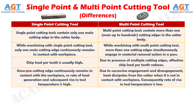Number 4: Since one cutting edge continuously remains in contact with the workpiece, the rate of heat generation and subsequent rise in tool temperature is high, whereas due to successive engagement and disengagement, heat dissipates from the cutter when it is not in contact with the workpiece. Consequently, the rate of rise in tool temperature is low.